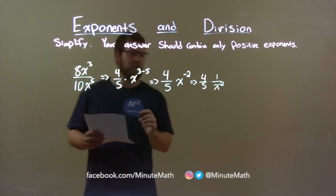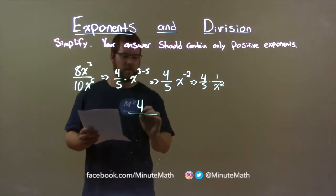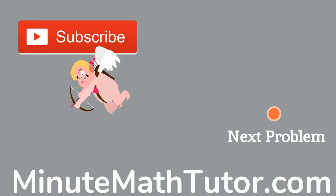And so, we can combine all this together for a final answer of 4 over 5x squared.